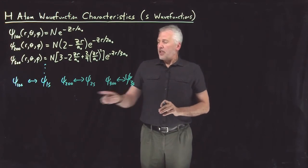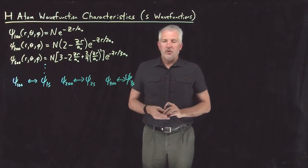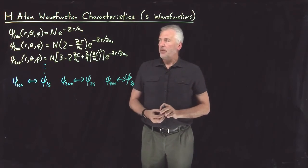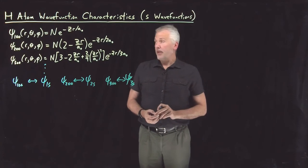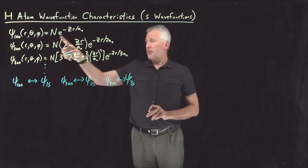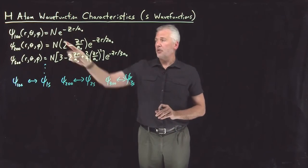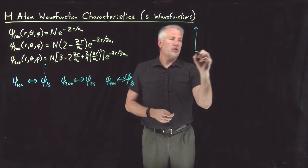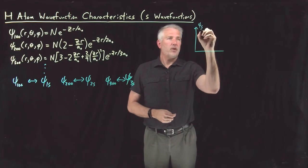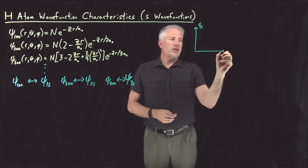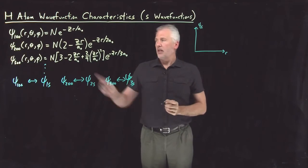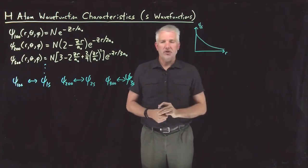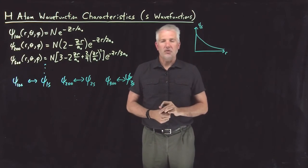To understand the shapes of these 1s, 2s, 3s orbitals, we need to look in more detail at these wave functions and see what they look like if we graph them. There's only one variable — theta and phi are not present — so we can just graph a function of an exponential. If I graph the 1s wave function as a function of distance, that's just an exponential function. It's going to decay exponentially with distance from the origin, or distance from the nucleus.